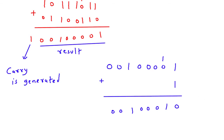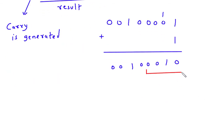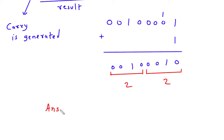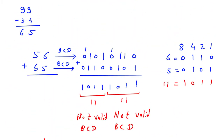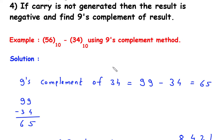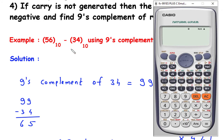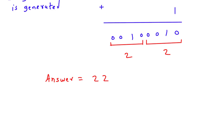Again we make the grouping of 4. Using the 8421 code for each group, the first group gives 2 and the second group also gives 2. So the answer is 22. We can verify this in a calculator: 56 minus 34 equals 22. Hence our answer is correct.